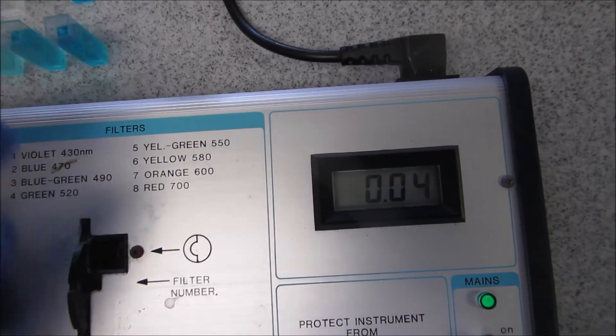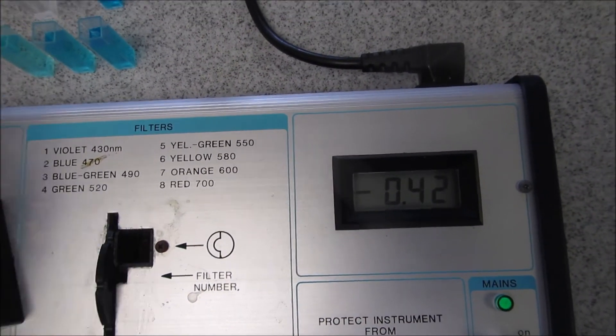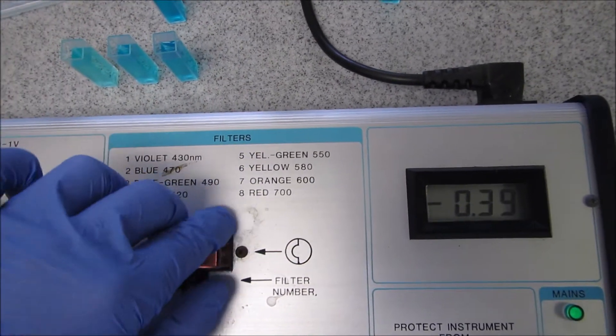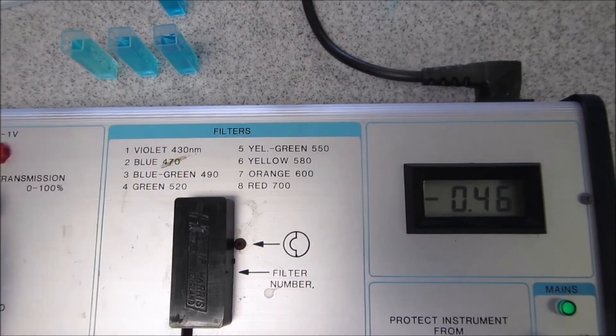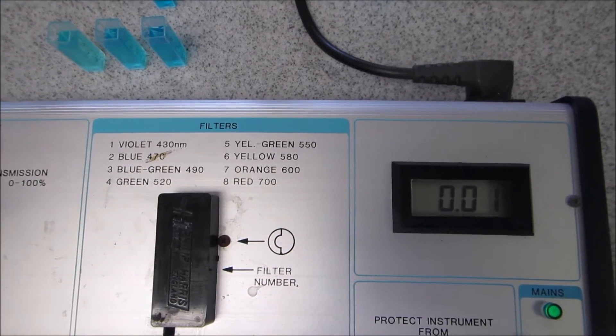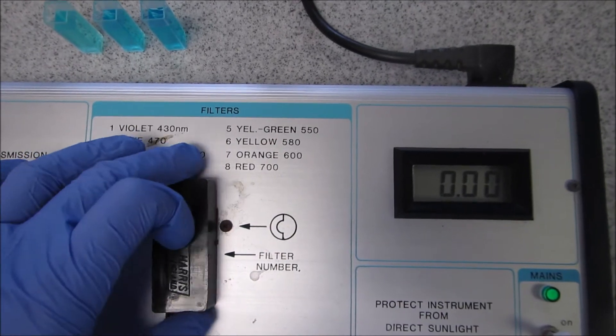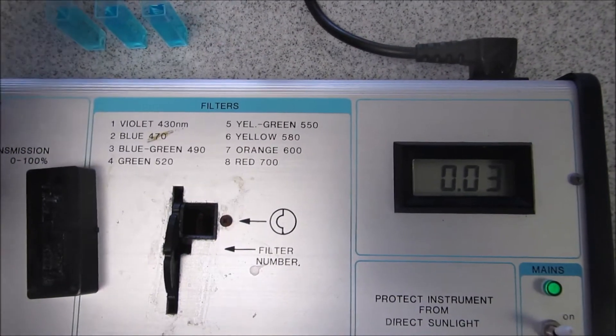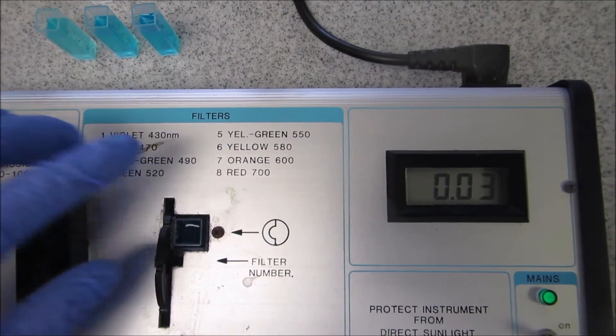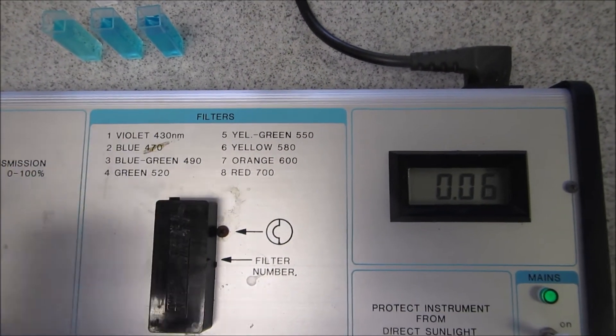I'm going to take it out, move it to the third one which is 490 nanometers, put in my blank and zero it. This is to find basically where the maximum absorbance is, because this is the wavelength that we want to use for all of our measurements.